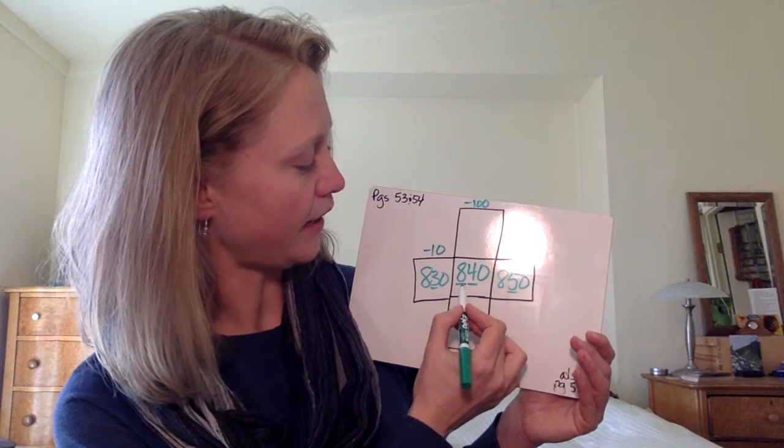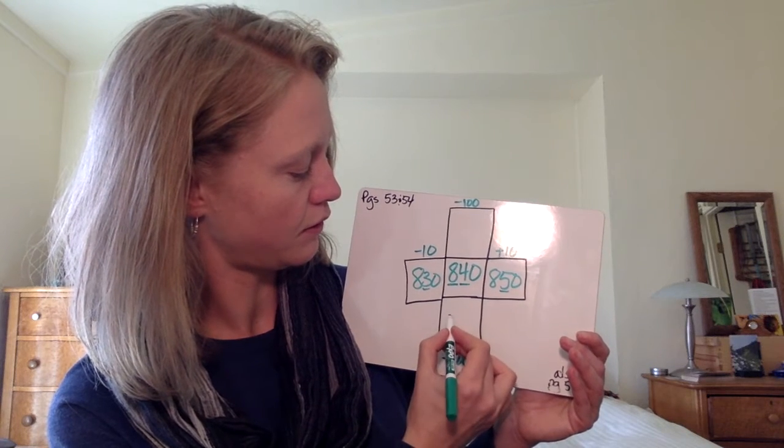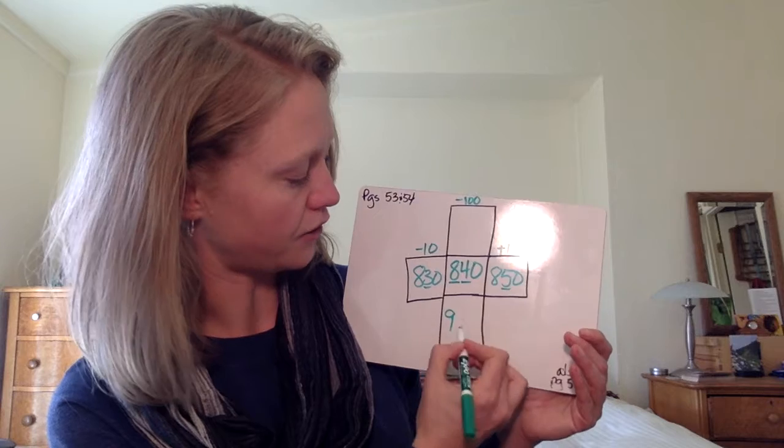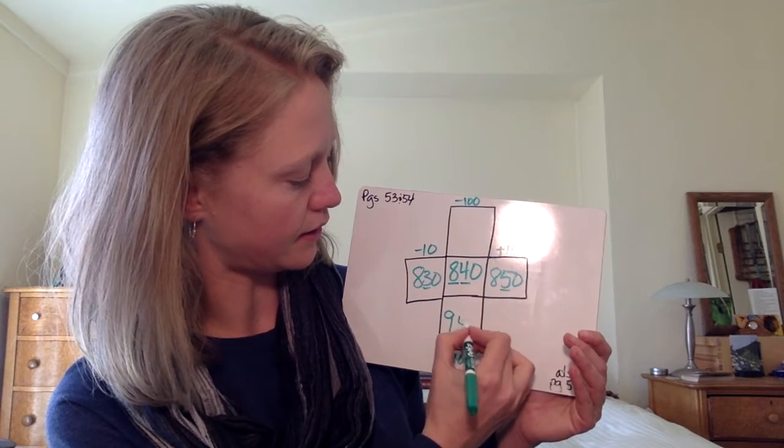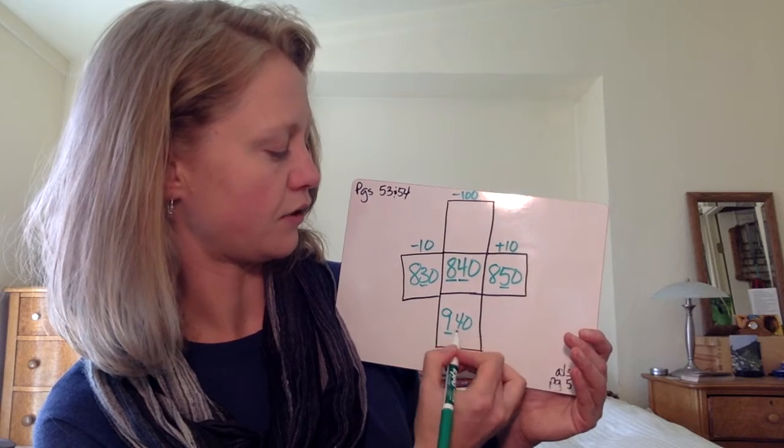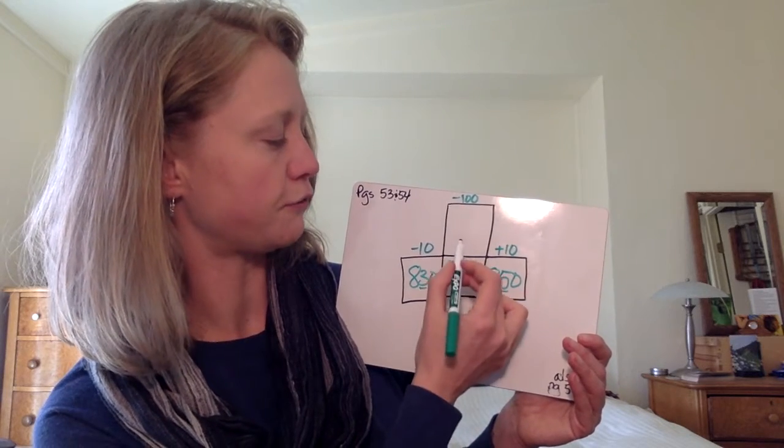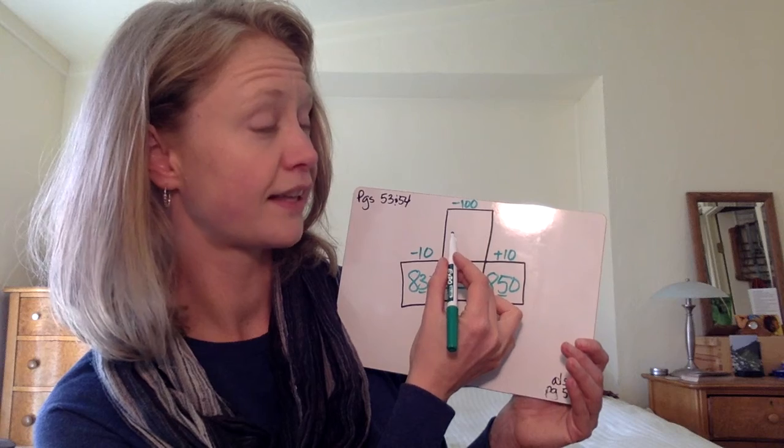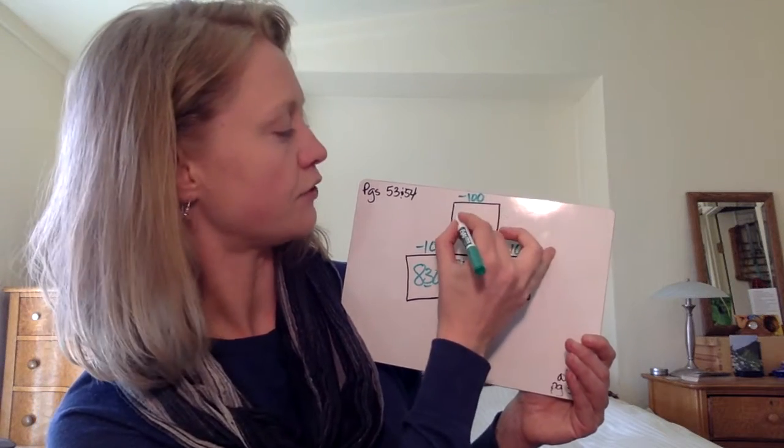So in which case if I'm at 850, what's my next hundred? 900. And then the 10 stays the same. If I'm going backwards, 940, 840. What would be 100 less than that? 740.